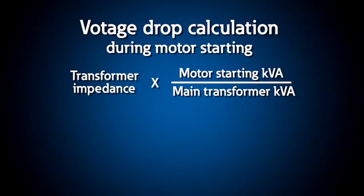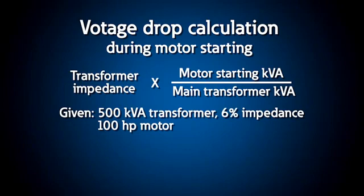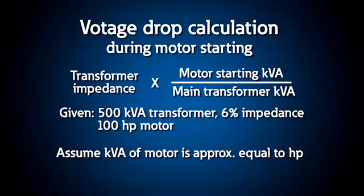For example, if the main transformer facility is rated 500 kVA with 6% impedance and you are starting a 100 horsepower motor across the line, you would estimate the voltage drop by the following method. First, assume the kVA of the motor is approximately equal to its horsepower.